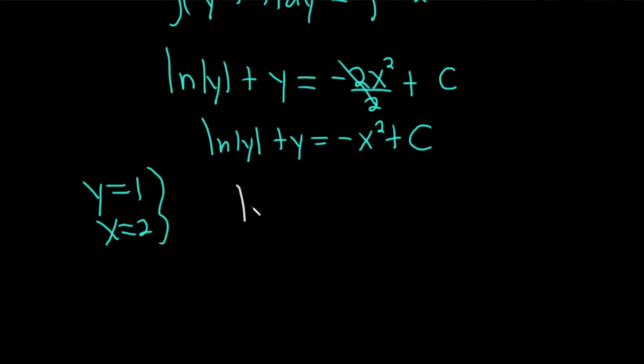So putting a 1 here, we get the natural log of the absolute value of 1 plus 1 equals negative 2 squared plus c. The natural log of 1 is 0. So you get 0 plus 1 equals negative 4 plus c, and then just add 4 to both sides. So c is equal to 5.